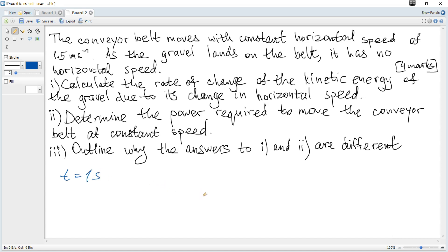Initially, kinetic energy is zero because initially horizontal speed is zero. Final horizontal speed is 1.5. Hence, final kinetic energy is 13 times 1.5 squared over 2 minus zero over 1. Hence, we get the required rate of change of the kinetic energy which is equal to 14.6 joules per second or watts.